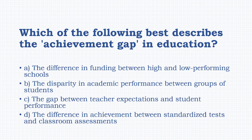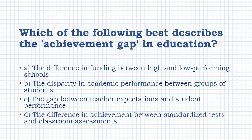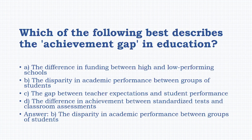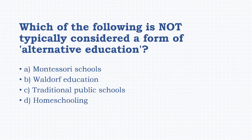Which of the following best describes 'achievement gap' in education? Options: the difference in funding between high and low-performing schools, the disparities in academic performance between groups of students, the gap between teachers' expectations and students' performance, the difference in achievement between standardized tests and classroom assessments. The answer is option B: the disparities in academic performance between groups of students.